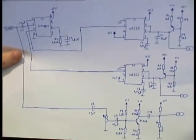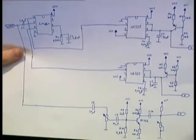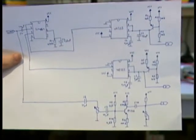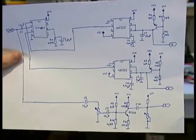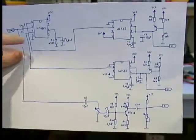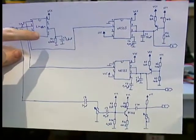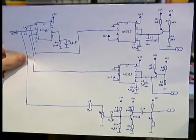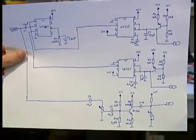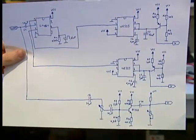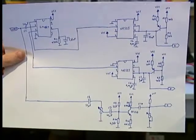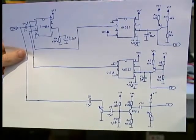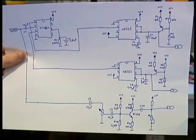Here you can see the circuit itself. The most important component is the LM1881. This is a video sync separator integrated circuit, used for separating the video synchronization signal into a horizontal and a vertical synchronization signal.